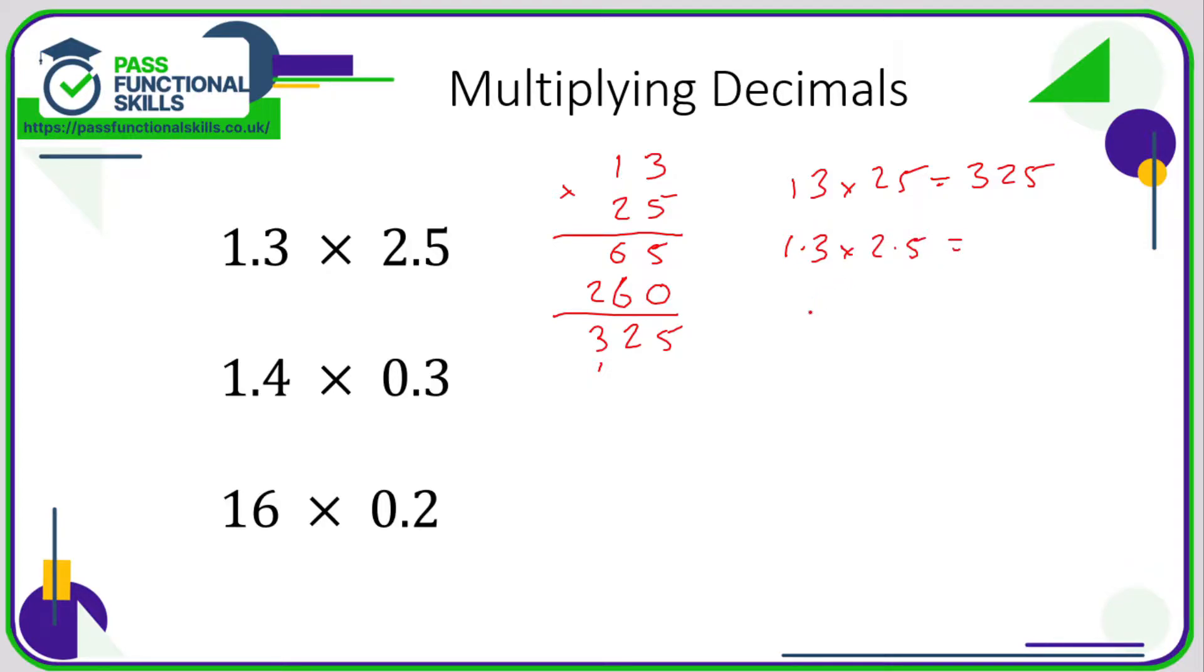But we want to work out 1.3 and 2.5. Now what you need to do is ask yourself: how many numbers can you see that come after a decimal point? In 1.3 there is one digit after a decimal point, and in 2.5 there is another digit. So in total in the question there are two decimal places. Therefore our answer needs to have two decimal places. If I put the decimal point here, I've only got one decimal place, but if I put it here, I now have two decimal places. So the answer is 3.25.